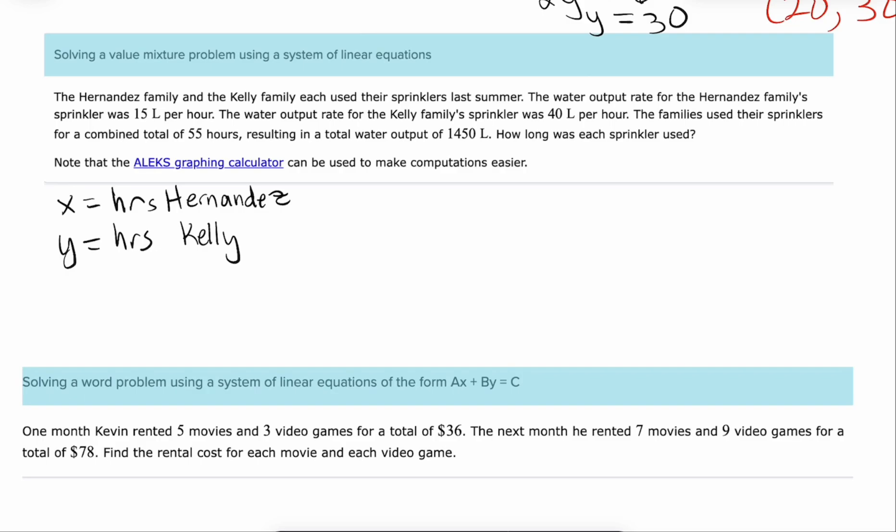So we know the total hours is 55. So x plus y equals 55. So there's usually one piece of information about their total and then one piece of information about their cost or their output. So the output is 1450. We haven't used that yet. Well if I run the Hernandez sprinkler for x hours and it's 15 liters per hour, that's 15x. The Kelly sprinkler is 40. For a total of 1450. So this is the total hours. This is the total liters and that's the difference between those two.